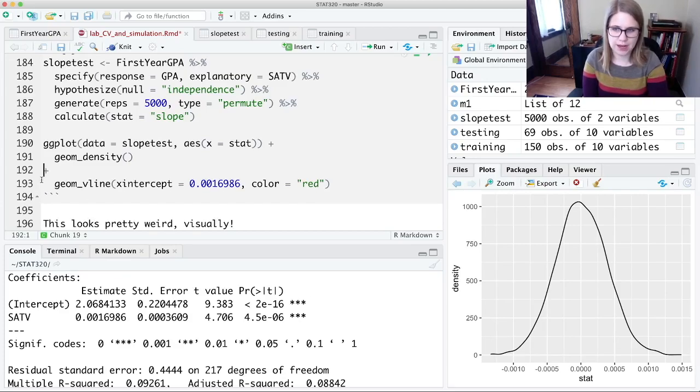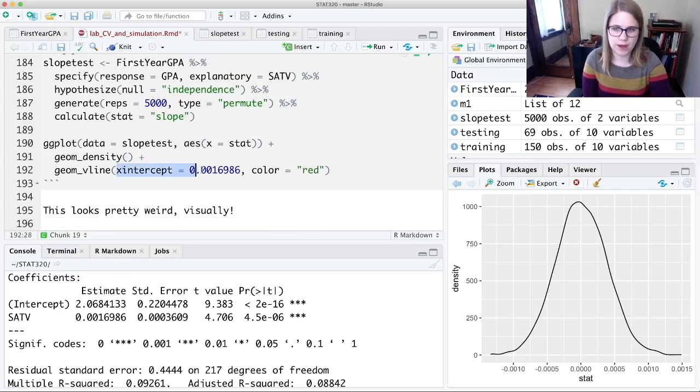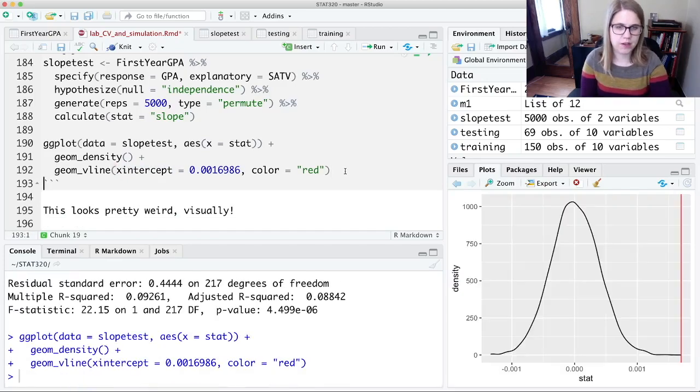If I wanted to, I could add a vertical line where the x-intercept is that value, and it's of a red color. And that'll show me, okay, there's where my observed value was. And so I can tell that my p-value, the proportion of the distribution as extreme or more extreme, is going to be really small. So it looks weird. I think we're going to reject the null.